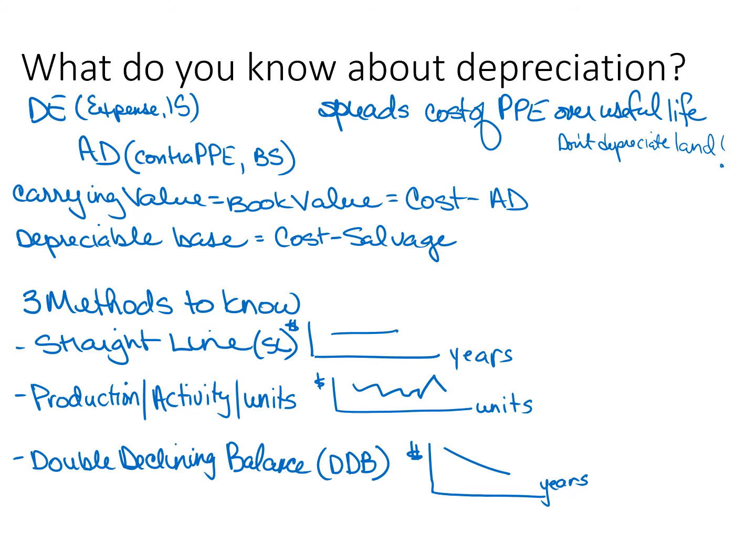Here are some terms we've been using. Depreciation expense is an expense that shows up on the income statement every year. Accumulated depreciation is a contra property, plant and equipment — or non-current asset — account that shows up on the balance sheet. We also know that we do not depreciate land. Carrying value is the same thing as book value: the cost of the property, plant and equipment less its accumulated depreciation.